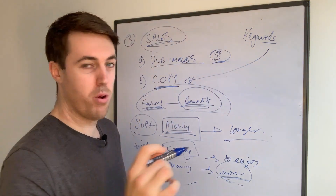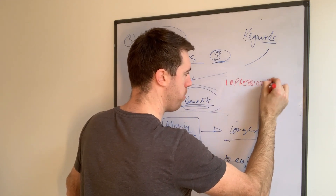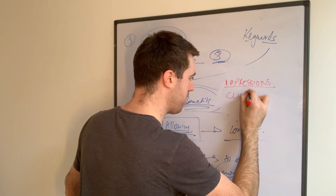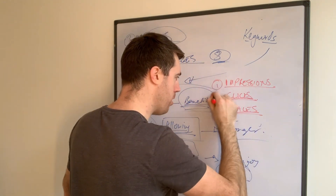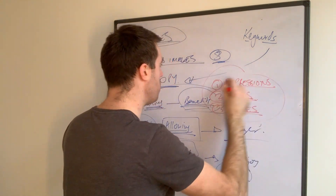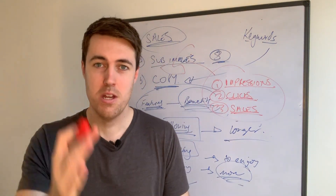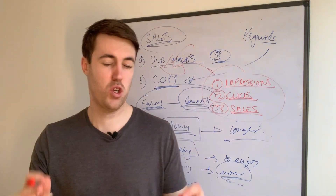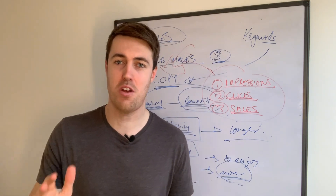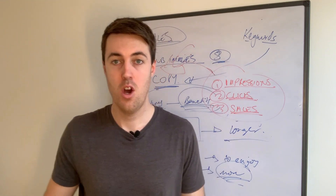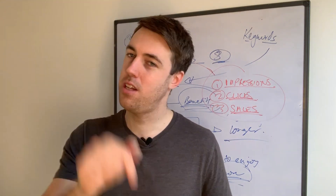Those are the three things to implement into your product listing to optimize it: one — impressions, get as many eyeballs on your product as possible; two — clicks, achieve a great click-through rate; three — sales, achieve a great conversion rate. Use all the tools I've given you in this video, implement what I've taught you, and there is an incredibly good chance that the odds are weighted in your favor to make thousands of pounds more in your business this year — all from a free YouTube video.